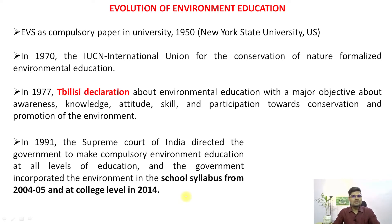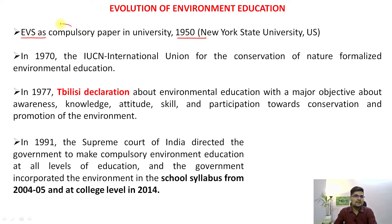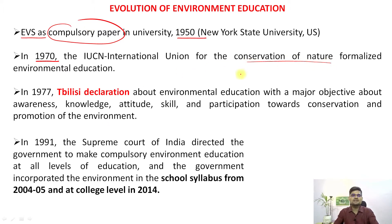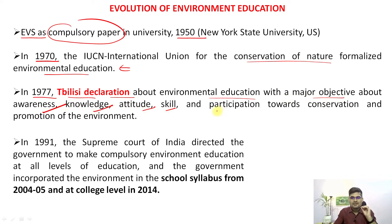Looking at the history and timeline of environmental education, it formally started with 1950, when it became a compulsory paper at New York State University. The 1970s saw the environmental turn — the phase of environmentalism — with events like Limits to Growth and the Stockholm Conference. The IUCN formalized environmental education in the 1970s, and in 1977 the Tbilisi Declaration established five major objectives: awareness, knowledge, attitude, skill, and participation.